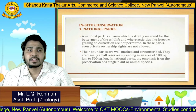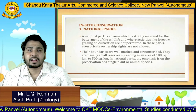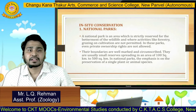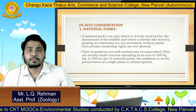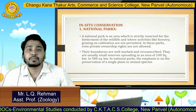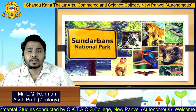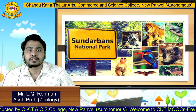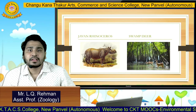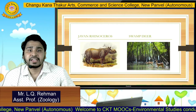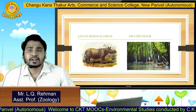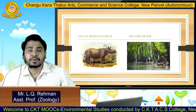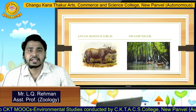National parks are usually small reserves spreading in an area of about 100 square kilometers to 500 square kilometers. In national parks, the emphasis is on the preservation of a single plant or animal species. For example, the Sundarbans National Park — the Javan rhinoceros and swamp deer of the Sundarbans National Park have already been extinct, so we must take different measures to prevent the extinction of these animals.